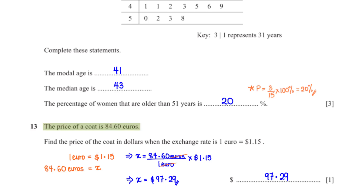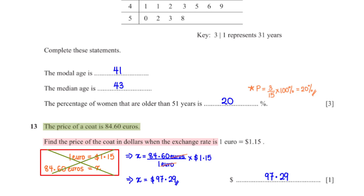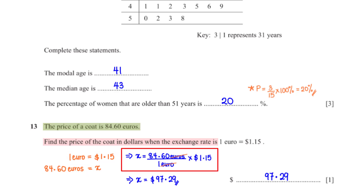The price of a coat is 84.60 euros. Find the price of the coat in dollars when the exchange rate is 1 euro equals 1.15 dollars. We set up the conversion ratio, then cross-multiply and make x the subject. This gives us 97.29 dollars.